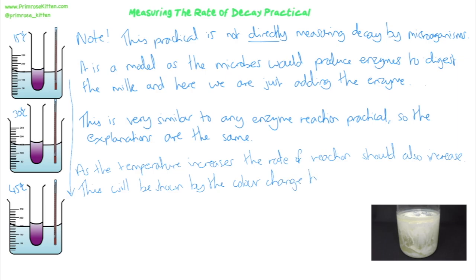You can link this to decay. As the temperature increases, the rate of decay would increase — that's very true. But at high temperatures, decay would stop because the microorganisms would be killed. Just don't use the word 'killed' for enzymes — enzymes are denatured, not killed, because they're not alive.